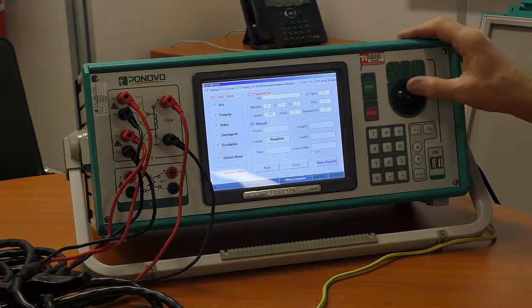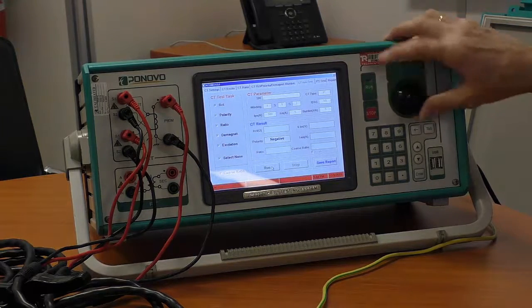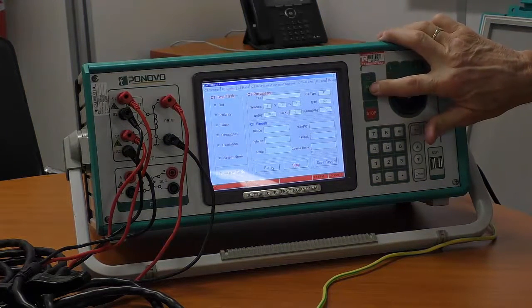So I just simply reverse the two wires over there. And okay, now I'll start the test again. Now I can push the button on the front here or I can press the button on the screen. I'll push the button on the front in this instance. Right, it's running.